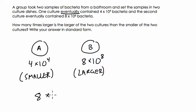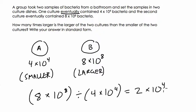So we have 8 times 10 to the 8th, right? Divided by 4 times 10 to the 4th. And here we divide these parts. 8 divided by 4 is 2. 10 to the 8th divided by 10 to the 4th is 10 to the 4th. And this is a 2 followed by 4 zeros.